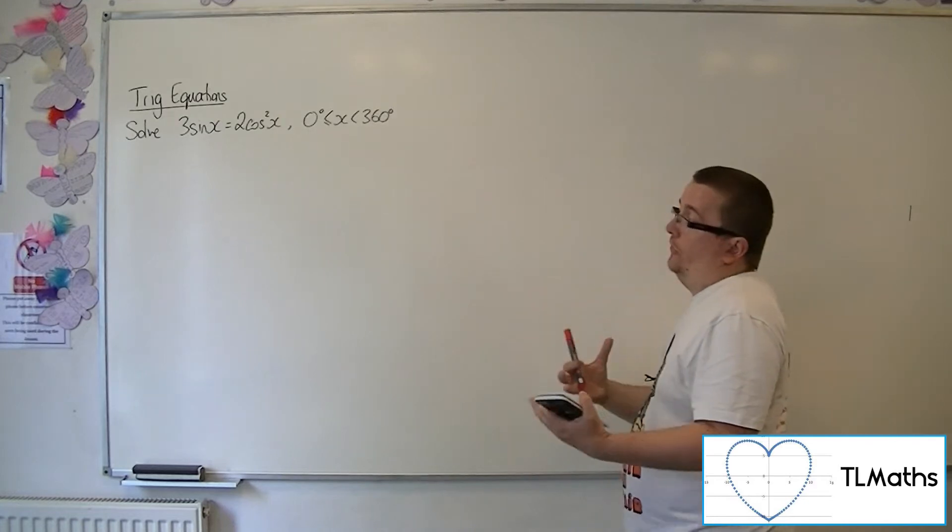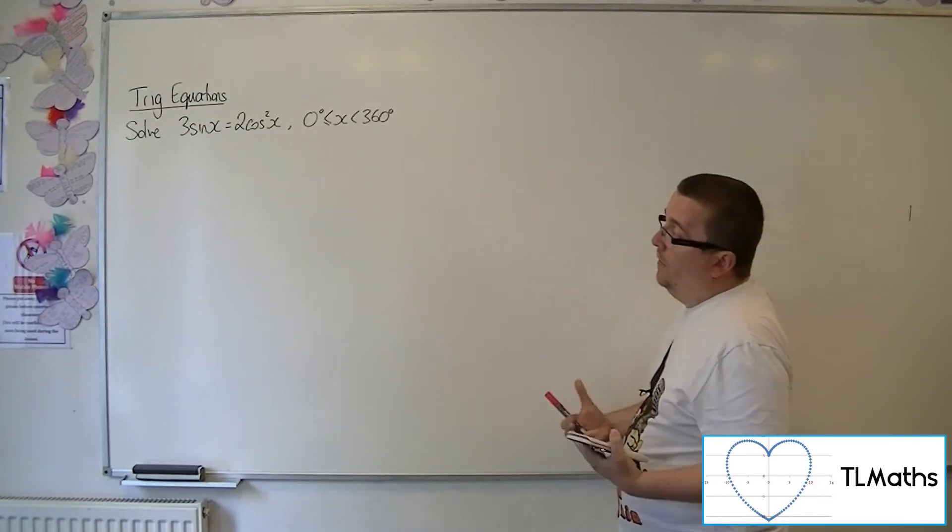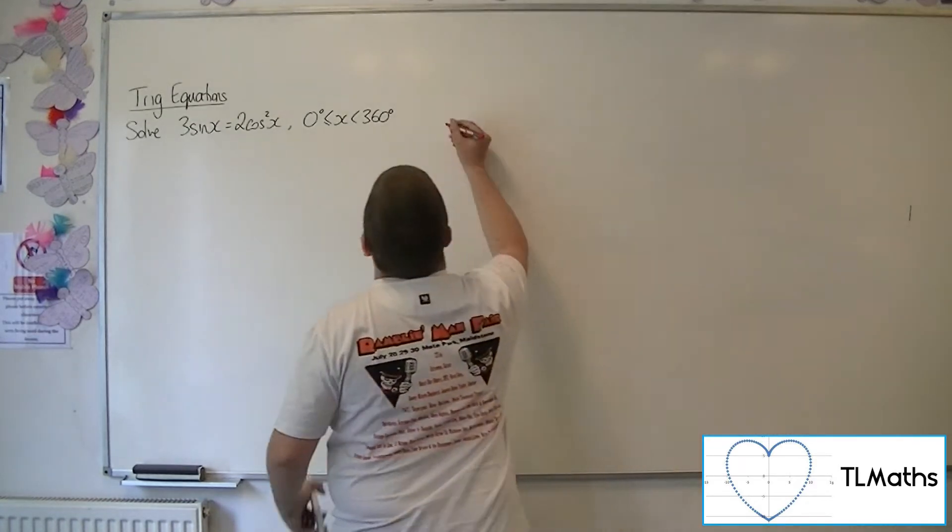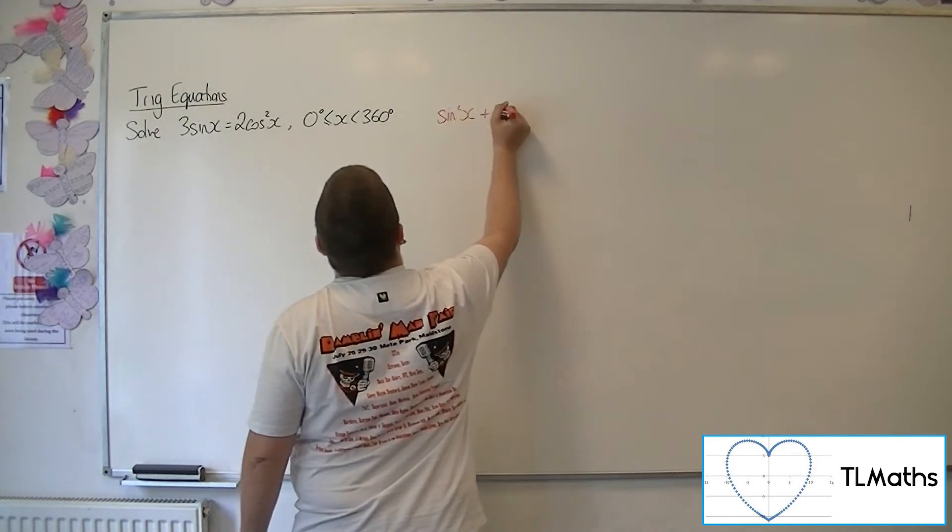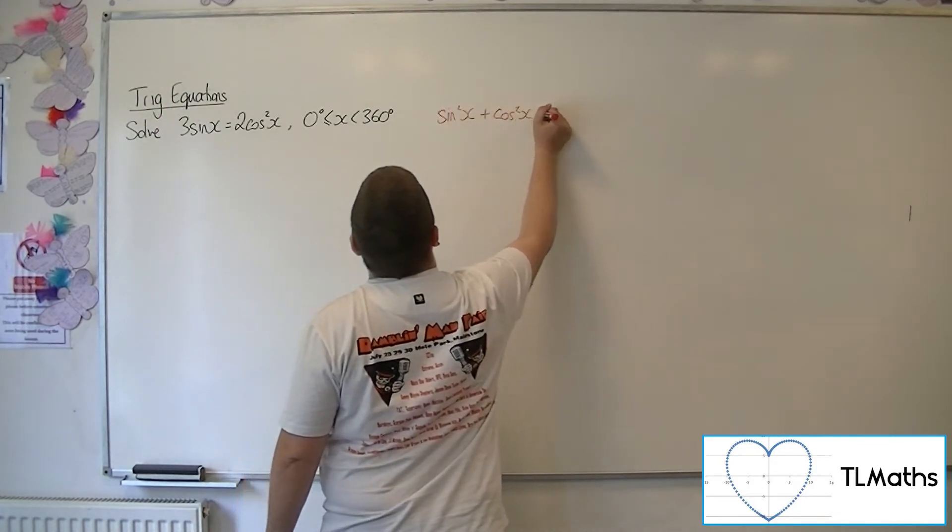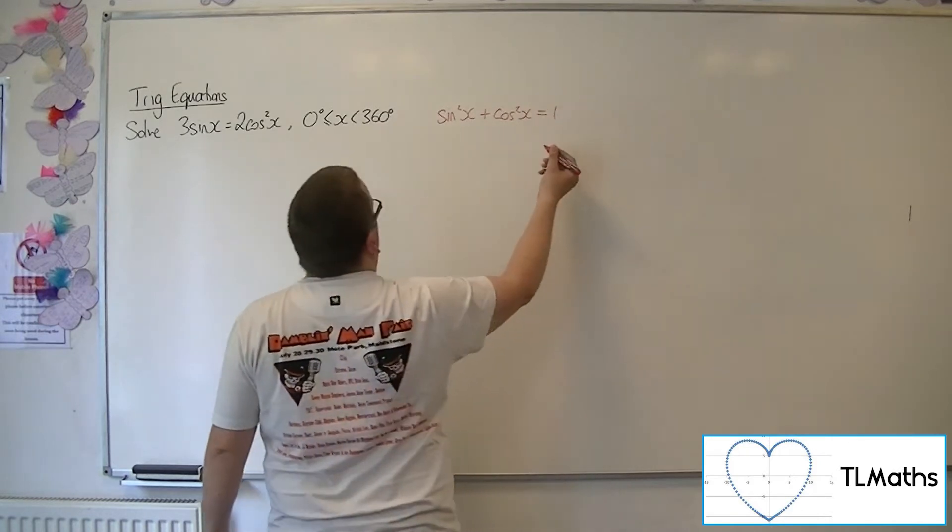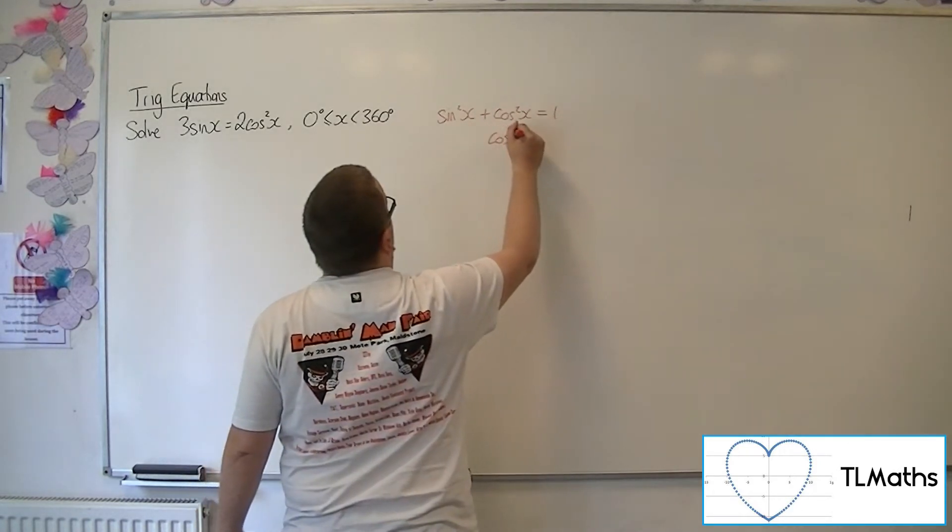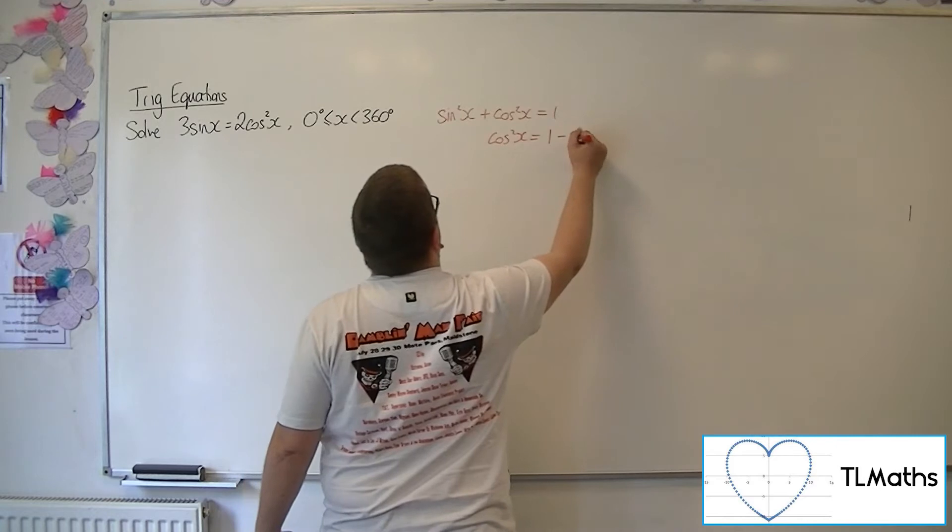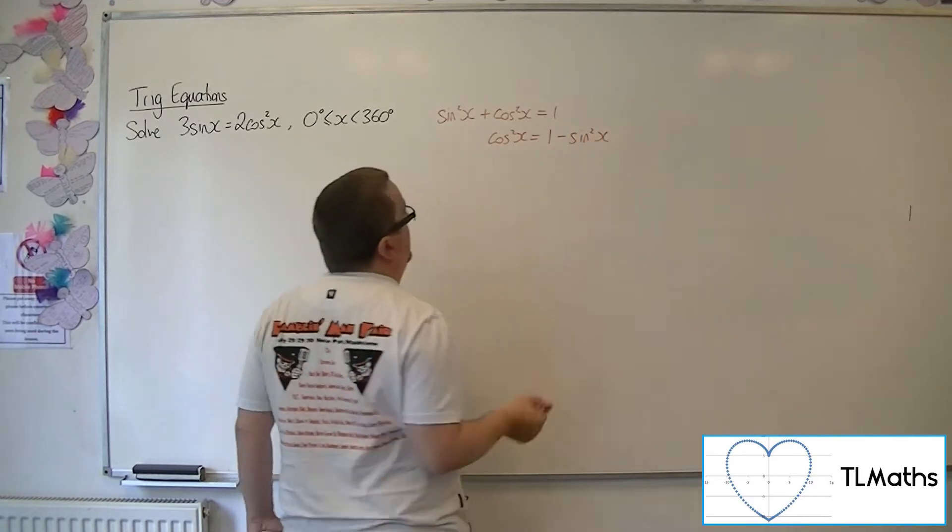I cannot do anything with it directly at the moment. I need to go back to that trigonometric identity, sine squared plus cosine squared is 1. Because then what I can do is rearrange it this time to get cosine squared as 1 minus sine squared.